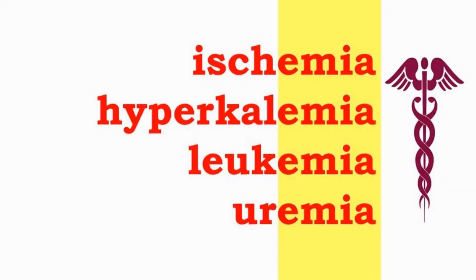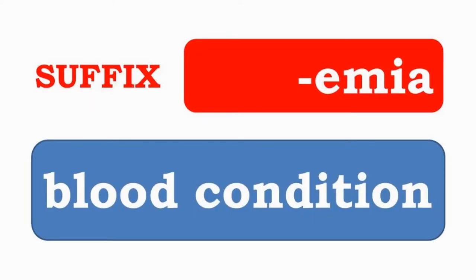Ischemia, Hypokalemia, Leukemia, and Uremia have the suffix -EMIA, which indicates a blood condition.